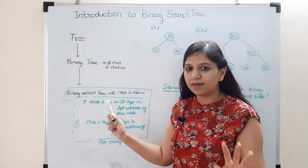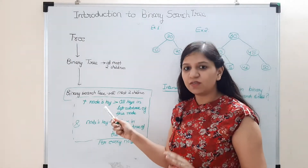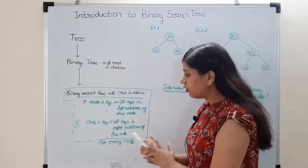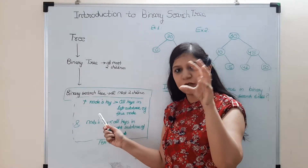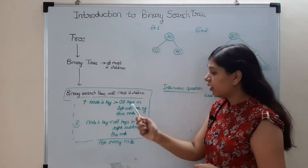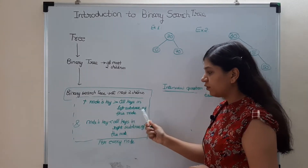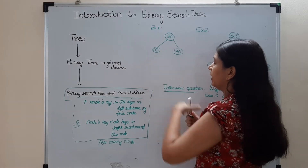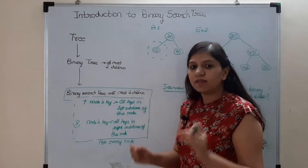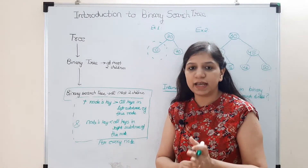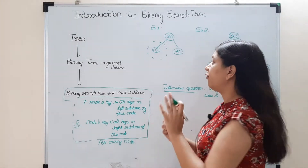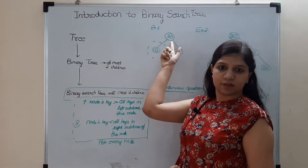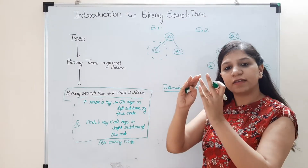Binary search tree is a binary tree, so it holds the condition that any node can have at most two children. Apart from that, there is one more condition: looking at any particular node — say 30 — all keys in the left subtree should be lesser than 30, and all values in the right subtree should be greater than 30. Left side smaller, right side bigger.